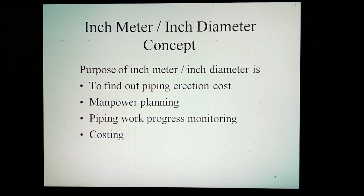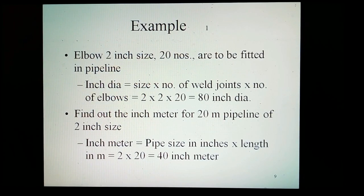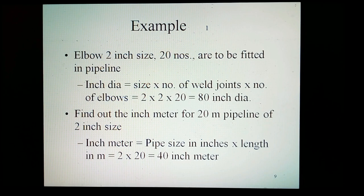Inch-meter and inch-diameter concept. The purpose of inch-meter and inch-diameter is to find out the direct cost, to do manpower planning, pipe work progress monitoring, and costing. Consider the example: there are elbows of 2-inch size, 20 numbers, to be fitted in a pipeline. Inch-diameter = size × number of welds × number of elbows = 2 × 2 × 20 = 80 inch-diameter. Inch-meter for 20-meter pipeline of 2-inch size = pipe size in inches × length = 2 × 20 = 40 inch-meter.